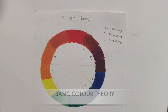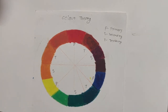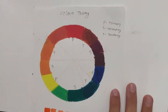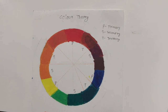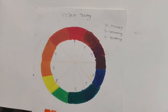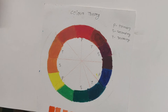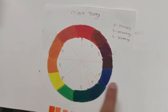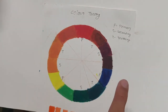Now we come to basic color theory. In actuality, color theory is a bit complex, but I've tried to simplify it as much as possible. Here we can see a color wheel with many types of colors — the major ones are primary, secondary, and tertiary. The primary colors are red, yellow, and blue, also known as primary blue, primary yellow, and primary red.